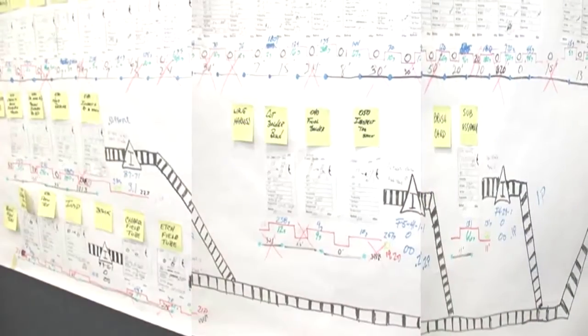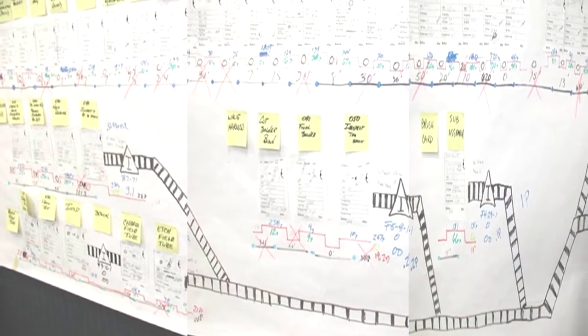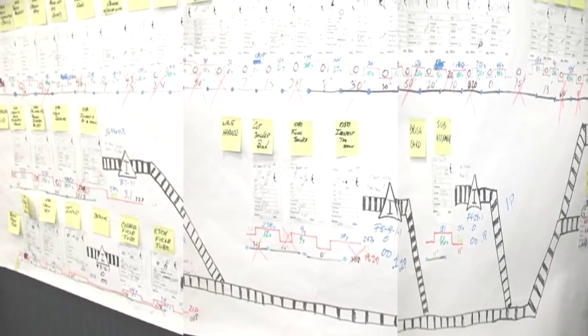Value Stream Mapping is a visual tool that helps us document all the activities required to receive and fulfill a customer's request. It helps people see what's really happening in the process through direct observation.